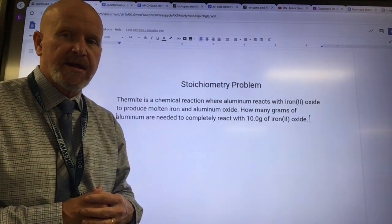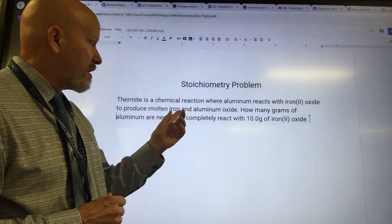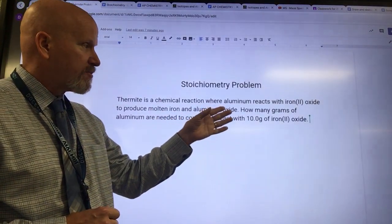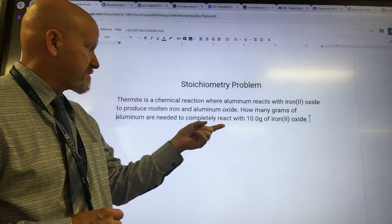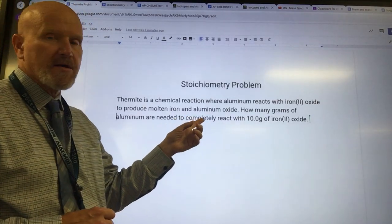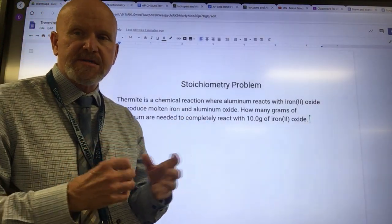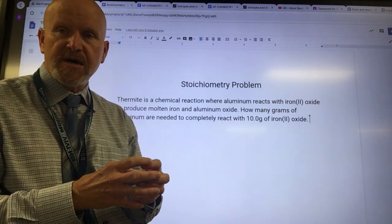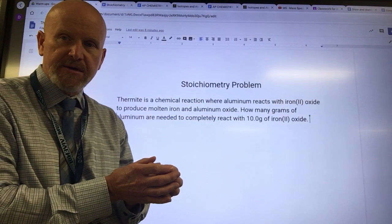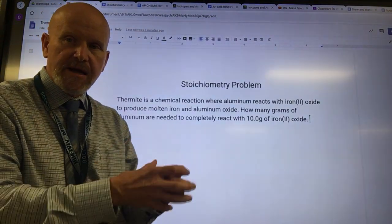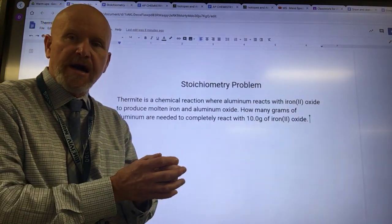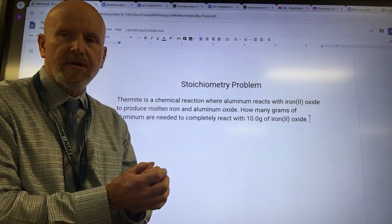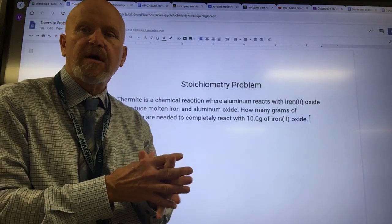Thermite is a chemical reaction where aluminum reacts with iron(II) oxide to produce molten iron and aluminum oxide. They used to use this thermite stuff like if you were a long ways away and repairing rails, you could actually take the thermite with a fuse on it, light this little pile, and it gets so hot.